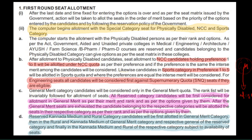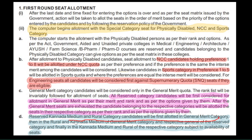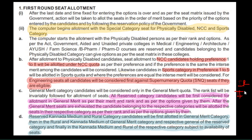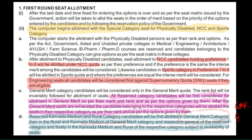First, general merit consideration. Reserve, Kannada medium, and rural category candidates will first be allotted in general merit category itself. Then, for Kannada medium and rural, after general merit, candidates with 1R, 2R, 3R categories are considered. GMR and GMK are allotted in general merit category first. Finally, in Kannada medium and rural respective categories, the remaining seats are allotted.